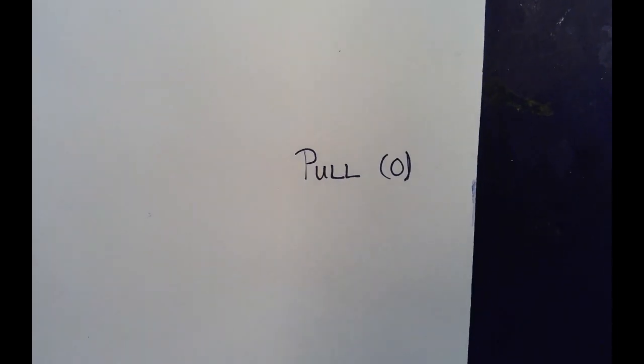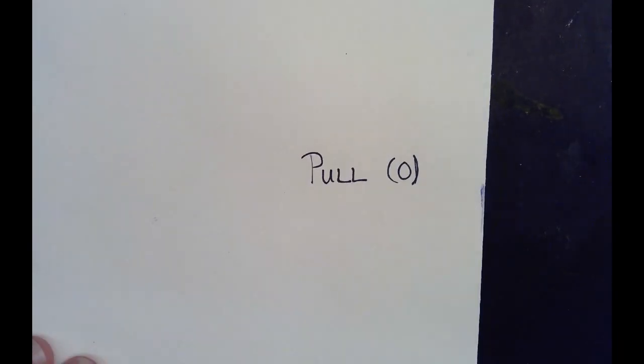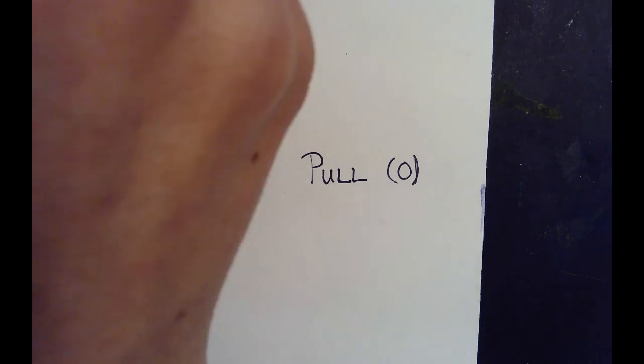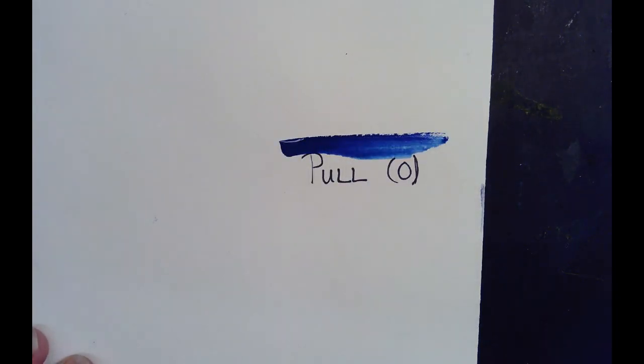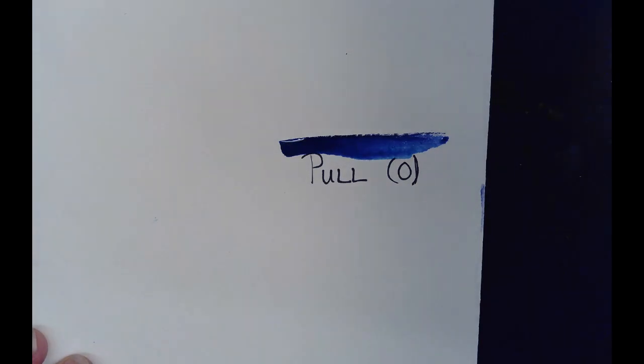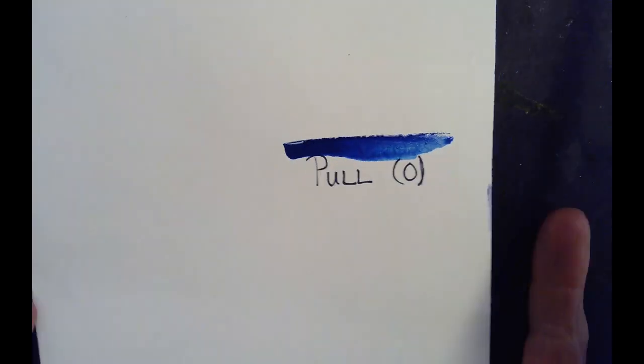To pull the paint down with just a wet brush, you're going to start off with putting your color at the top, and then you're going to clean your brush. Notice how the paint stays put.